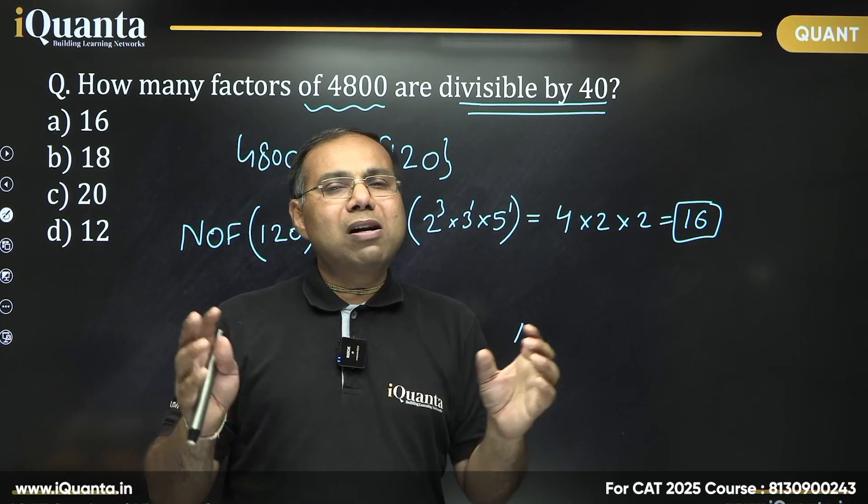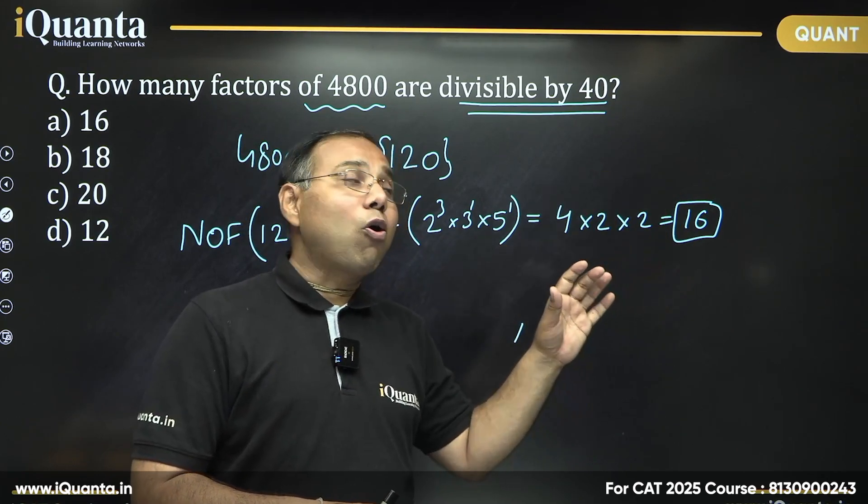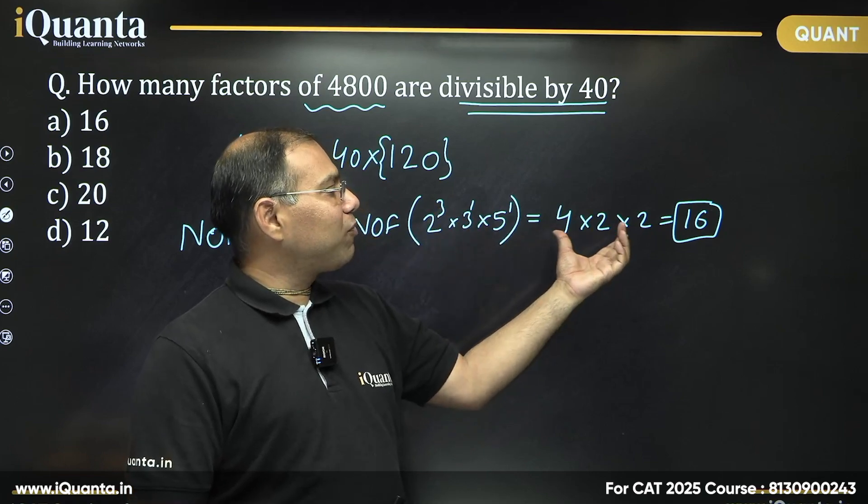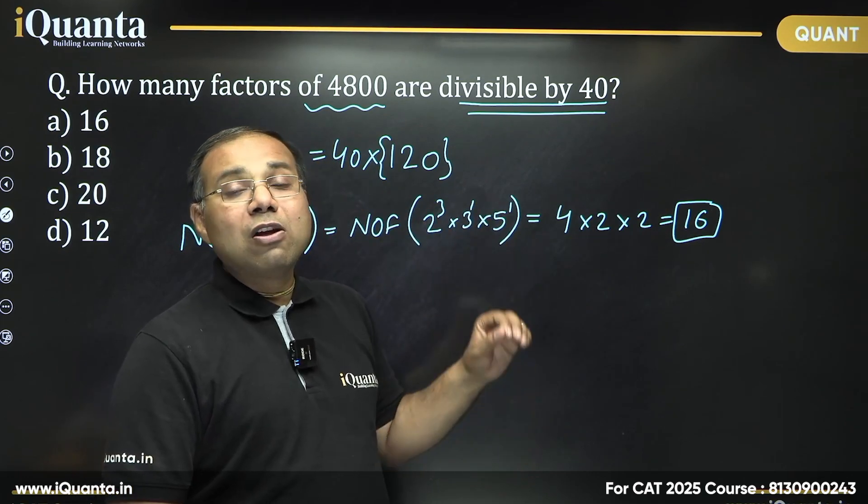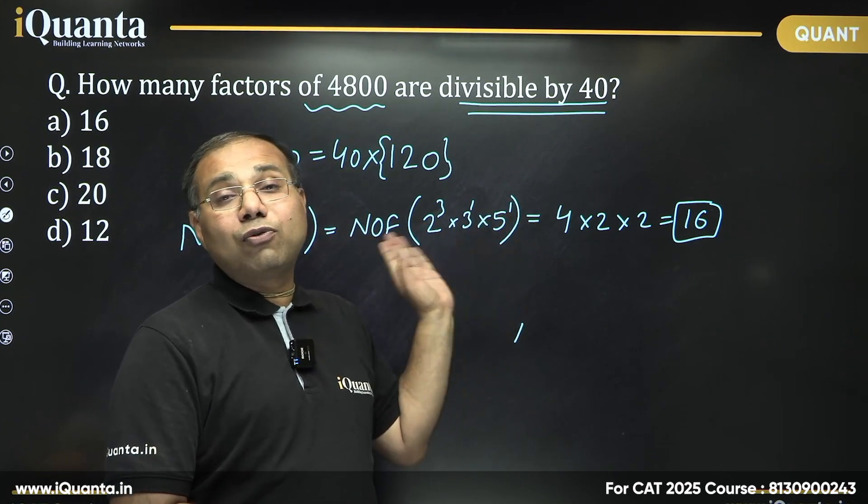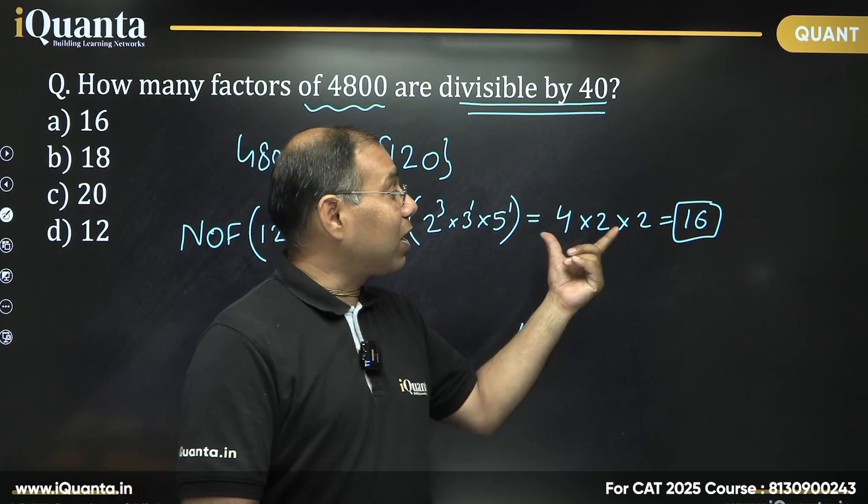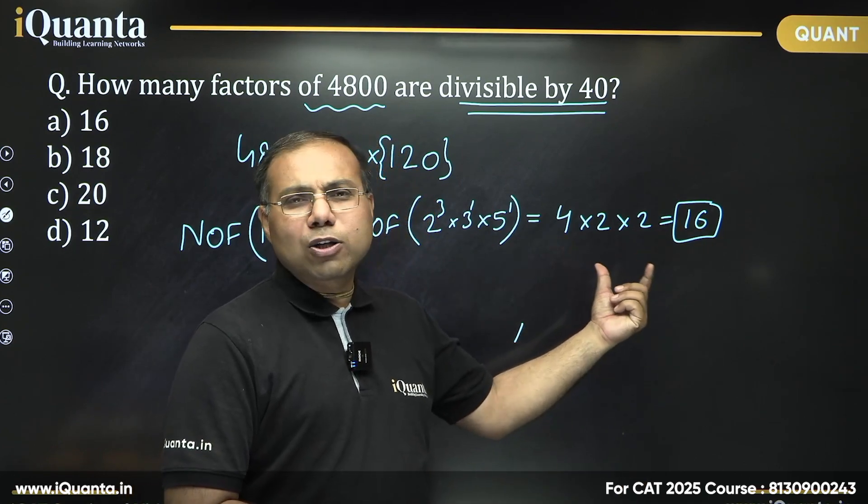So when we multiply all these combinations, we get the total 16 such factors which includes all type of factors, right? There would be factors among the 16 which are multiple of 8, which are multiple of 3, which are multiple of 5, which are not multiple of 3, which are not multiple of 5, which are not multiple of any 3 of them, that is 1, right? So that 1 is also included here. So that is it. That was the question here. And I hope you have understood the idea as well.